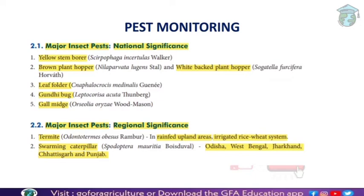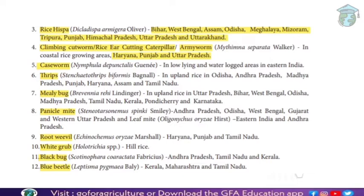Regional significance means the pest is dedicated to a particular region only. Termites are a problem in rain-fed planted areas and rice-wheat irrigation systems. Swarming caterpillar is a problem in Odisha, West Bengal, Jharkhand, Chhattisgarh, and Punjab. Rice Hispa occurs in Bihar, West Bengal, Assam, Odisha, and Meghalaya. Climbing cutworm, rice ear-cutting caterpillar, and army worm are problems in Haryana, Punjab, and Uttar Pradesh. Case worm occurs in low-lying and water-logged areas. Thrips affect upland rice in Odisha, Andhra Pradesh, Madhya Pradesh, Punjab, Haryana, Assam, and Tamil Nadu.